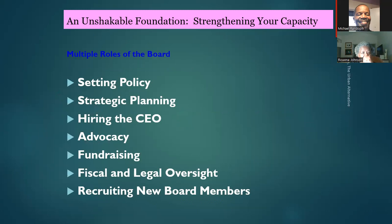The multiple roles of the board include setting policy, strategic planning — we're going to be putting together your strategic plan — hiring the CEO, and advocacy. That's one of the reasons why you take this training, so you can talk to people and convince them why they should fund your programs. Other roles include fundraising, fiscal and legal oversight, and recruiting new board members, so if someone asks what your board does, you'll be able to answer clearly.